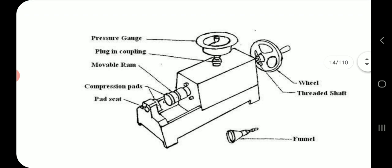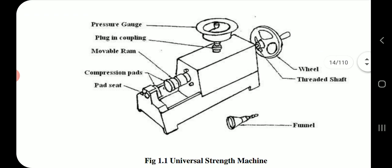This is the diagram of the universal strength testing machine, comprising of a wheel, threaded shaft, funnel, pad seat, compression pads, movable ramp, plug-in coupling, and pressure gauge.